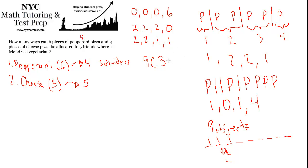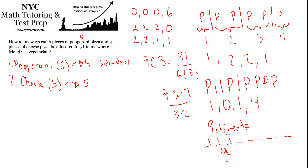For those who remember combinations: 9C3 equals nine factorial over six factorial times three factorial, which simplifies to nine times eight times seven over three times two, giving twelve times seven, which is 84. So there are 84 ways to allocate six pieces of pepperoni pizza to the four meat-eating friends.